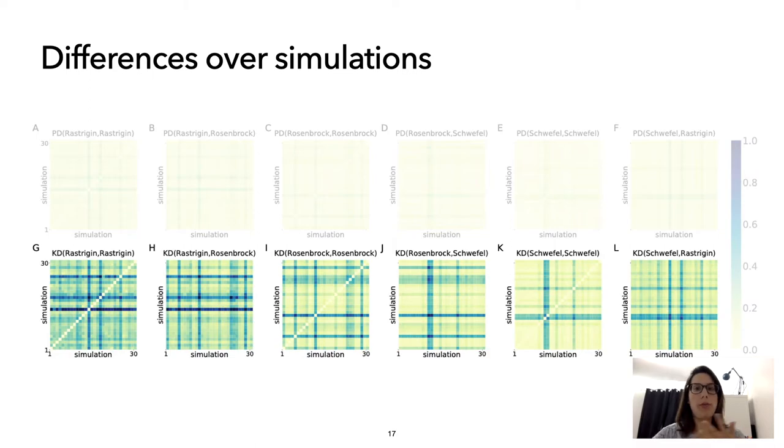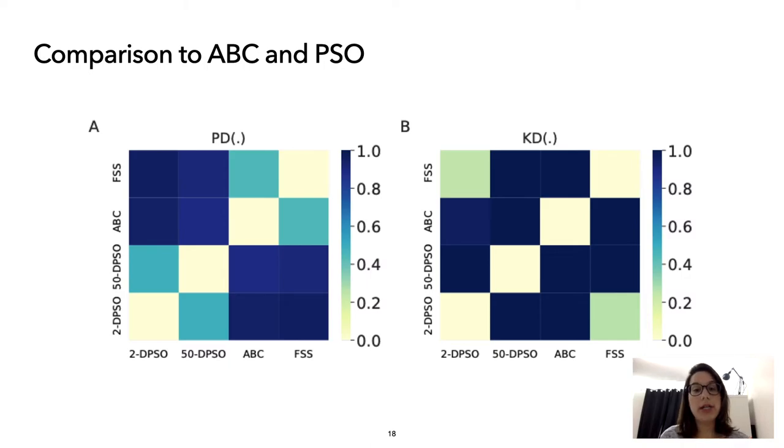Then now we can compare FSS with all the techniques. We compare the interaction network of FSS to two other algorithms, ABC, artificial bee colony, and PSO, particle swarm optimization. We use again both metrics, both portrait and Kullback divergence. We then observe that the network structure of PSO, using two different communication topologies, and that ABC, FSS, and PSO have different network structures.